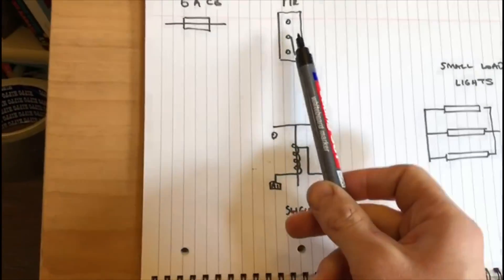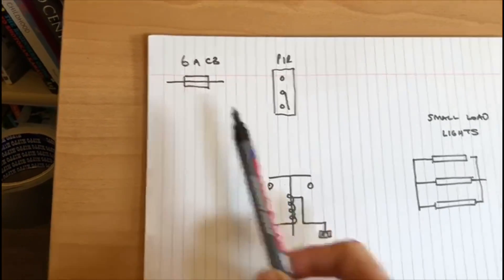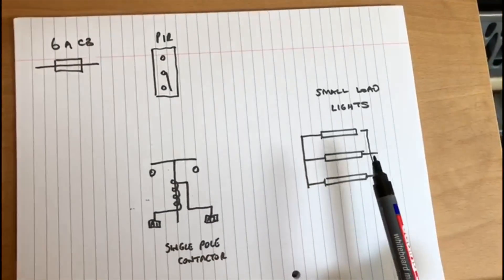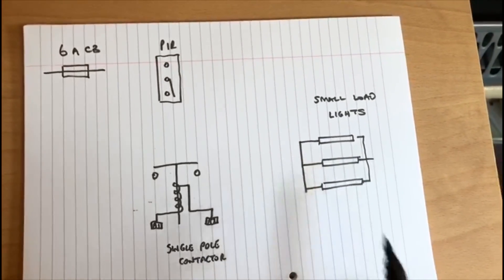We have the PIR again, which is the same, and then we are just using one six amp circuit breaker. It's important also on the lighting circuit to say that it's just a small load going through this one.